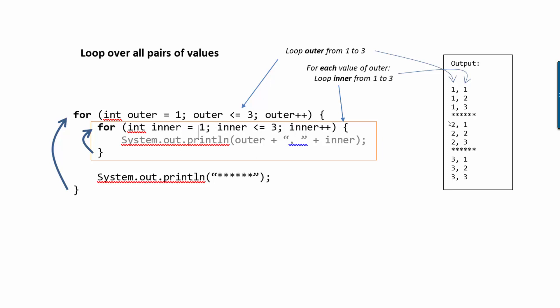Inner goes all the way from one to three, which you see here in the output. So while outer is two, inner goes from one to three. And then we print stars. And then we do the last iteration for the outer. So that's a pattern you can use if you want to loop over all pairs of values between something and something.